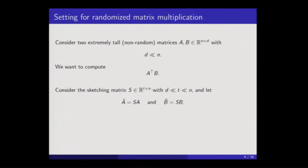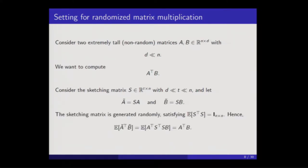For randomized matrix multiplication: I'll be dealing with two very tall matrices A and B, with n rows and d columns, where n is much larger than d. Ideally I'd like to compute A-transpose B, but it's too expensive, so I'll use sketches. I'll use t to denote the sketch size, which we think of as being between the small dimension d and the large dimension n. I'll take the sketches A-tilde and B-tilde and multiply those together to form an approximation to the true product. For developing a bootstrap method, the particularities of the sketching matrix are not so crucial — the only properties I'll need are that its expected gram matrix is the identity and that the rows are essentially independent.